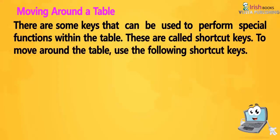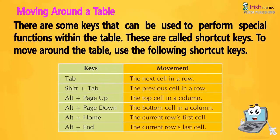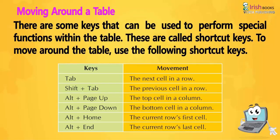Shortcut keys can be used to perform special functions within the table. To move around the table, use the following shortcut keys: Tab — move to the next cell in a row; Shift+Tab — the previous cell in a row; Alt+Page Up — the top cell in a column; Alt+Page Down — the bottom cell in a column; Alt+Home — the current row's first cell; Alt+End — the current row's last cell.